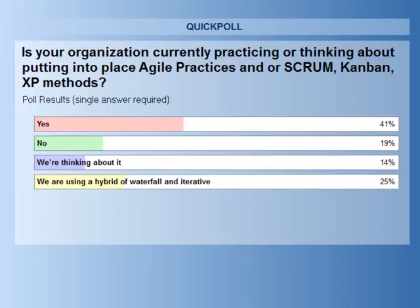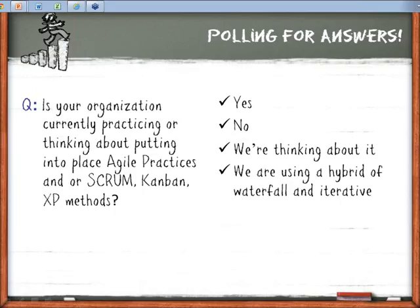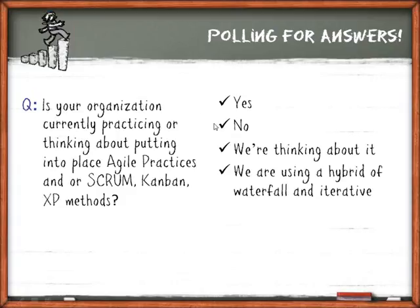The poll came in: 41% say yes, using agile practices. 25% are using a hybrid waterfall/iterative approach. No is third, and 14% are thinking about it. That is definitely some positive signs. I'm a big fan of Scott Ambler — I'd encourage you to visit his website at ambysoft.com. On a regular basis he runs polls and surveys to give indication of how the Scrum movement is taking off and what positive impact it's having. Download his spreadsheets and PowerPoint presentations — really good materials and content.